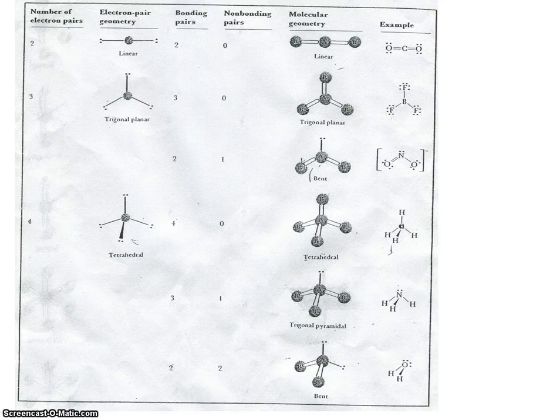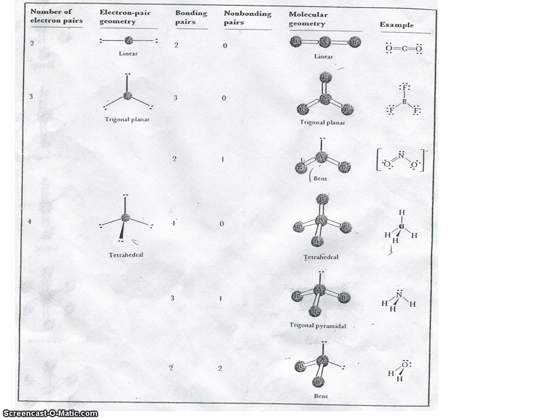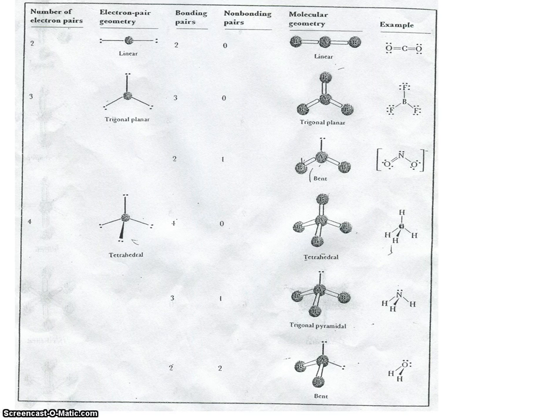Now we've already established that electron pairs repel each other. And as they repel each other, they take on a variety of shapes. Let's look at those shapes now.